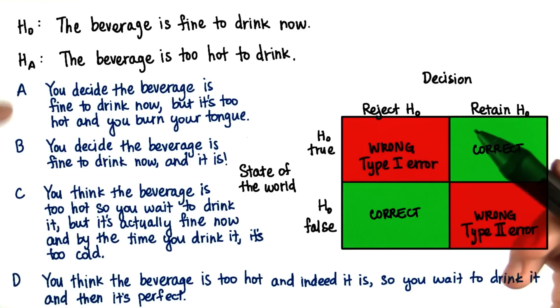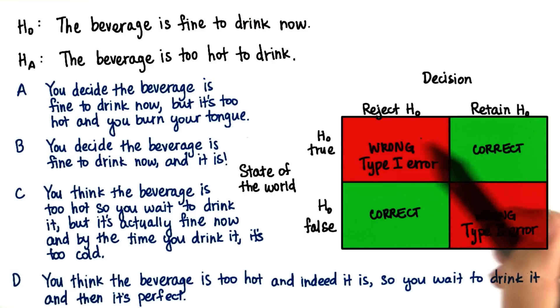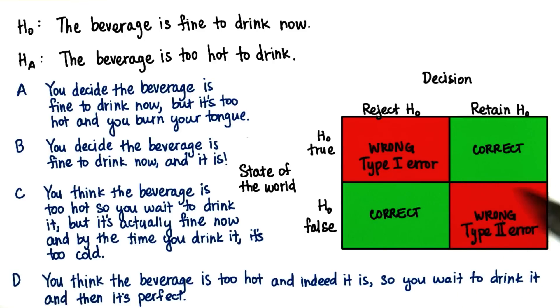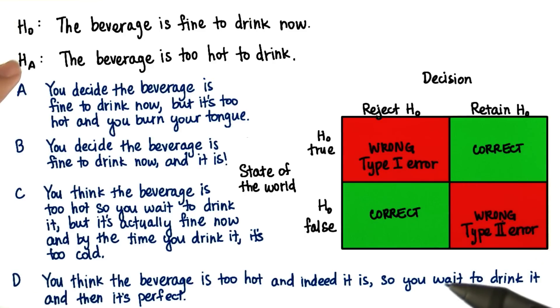Now put a, b, c, or d in the respective box as it belongs. And remember what H-naught and H-a are.